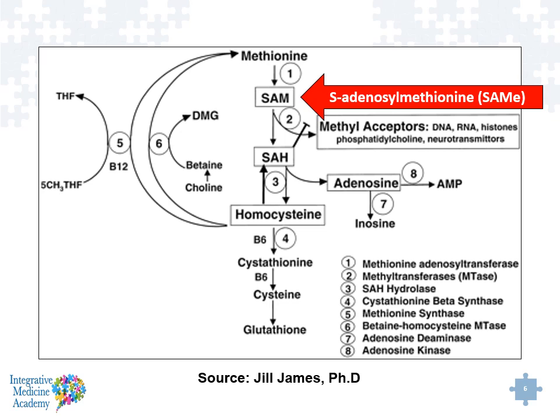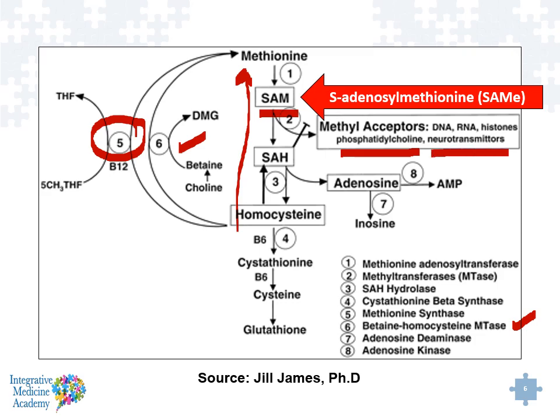SAMe is part of the methylation cycle — specifically the methionine cycle. Homocysteine gets converted to methionine through the actions of the methionine synthase enzyme or the enzyme called betaine homocysteine methyltransferase. S-adenosylmethionine comes off the back end of methylation as we move from methionine back down to homocysteine. What's important about SAMe is that it is a methyl donor for methylation of DNA and RNA at the nucleus level of our cells. It also has importance in regulating cell membranes of the body as well as supporting neurotransmitter function.